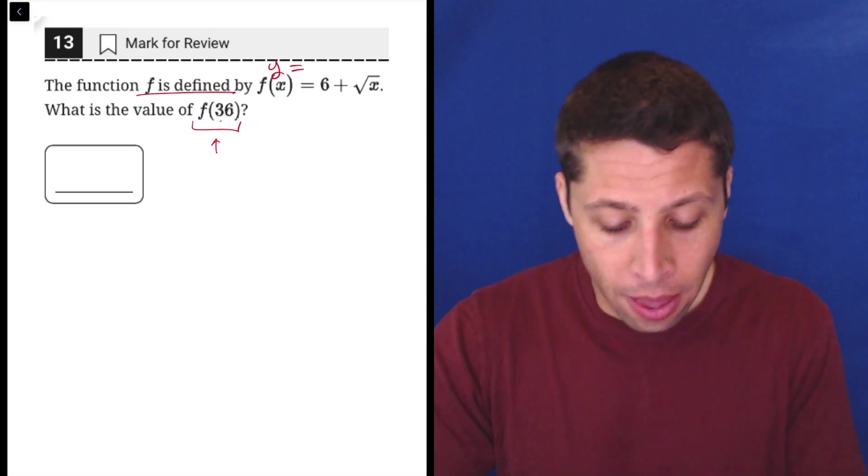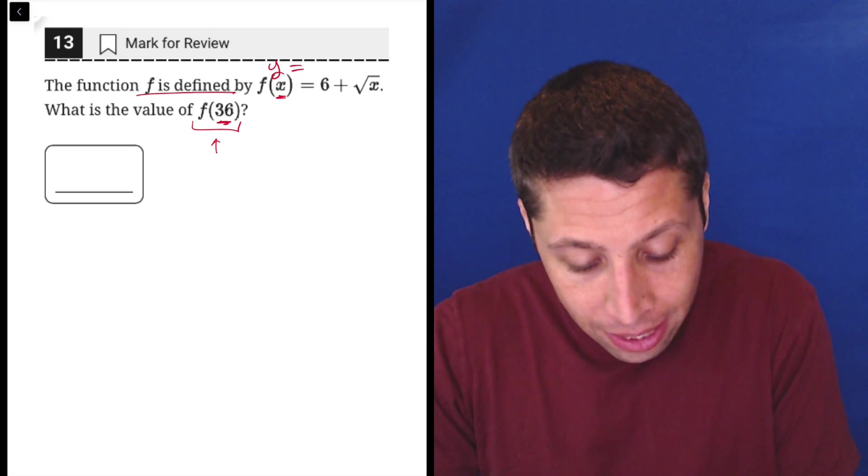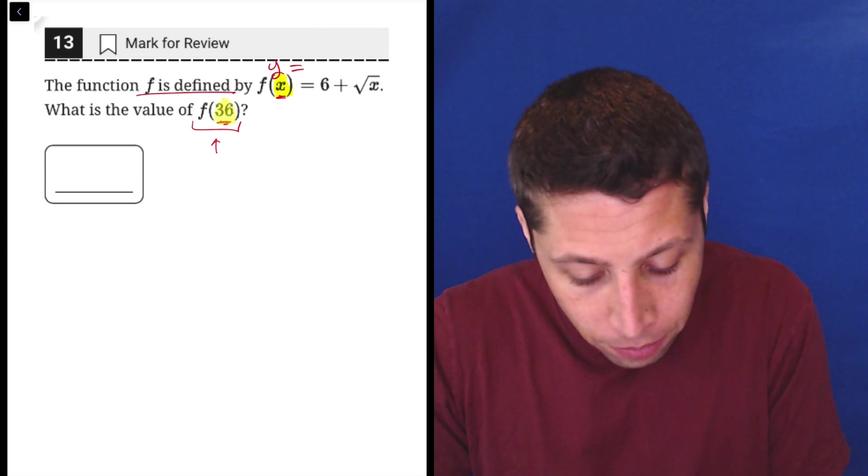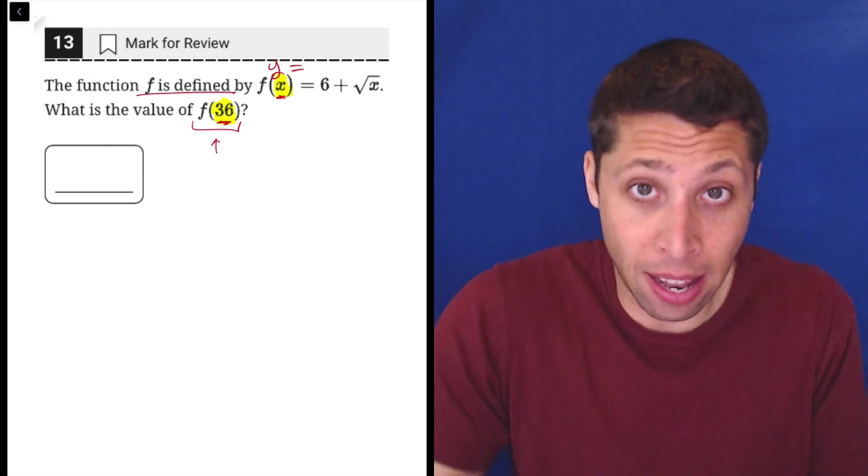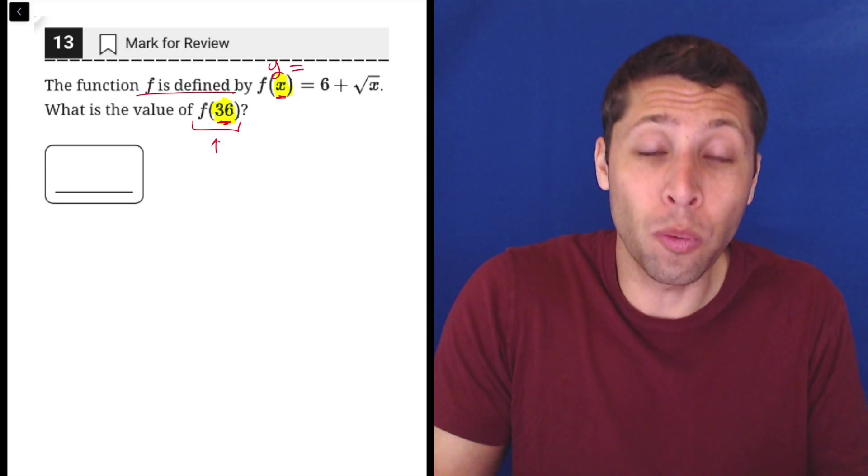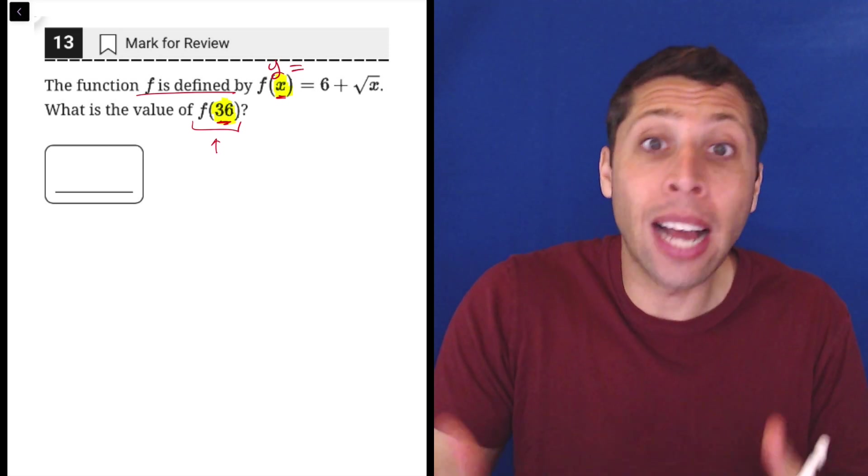Basically what it's doing is saying, okay, that 36, notice how that's in place of the x, right? It's in those parentheses in that spot that normally has the x, that had an x when they told us what the equation was.